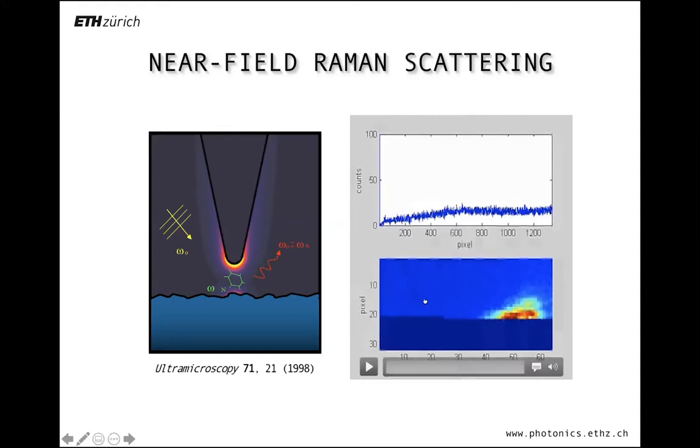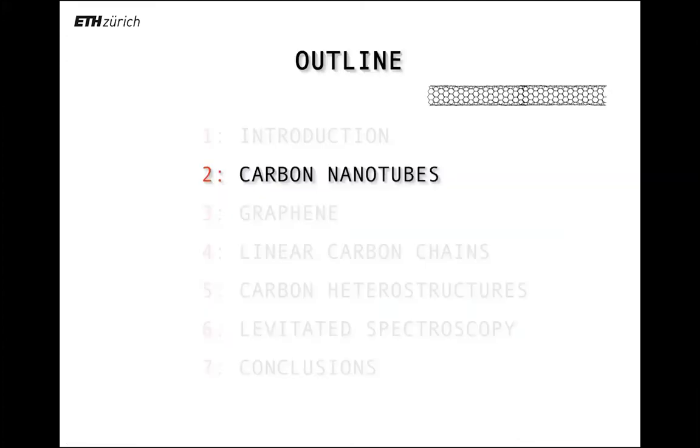Here on the side, we have a data set that visualizes how this is being done. Here is the spectrum being updated in real time, and here you have a running pixel. Whenever the tip goes over this carbon nanotube bundle, you see that we get a characteristic Raman spectrum with different lines.